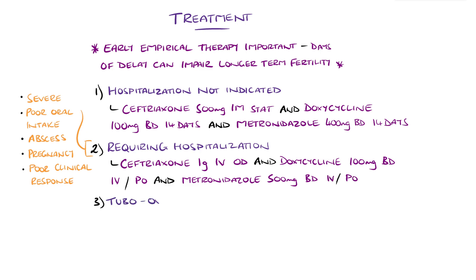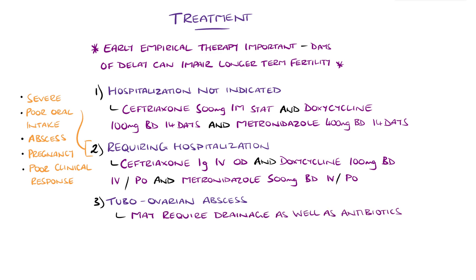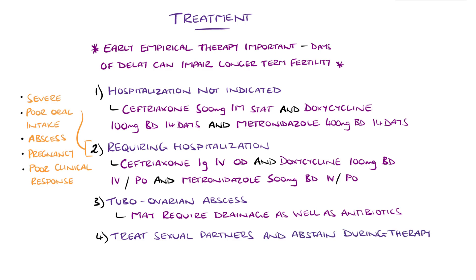Tubo-ovarian abscess may require drainage guided by ultrasound or CT, in addition to antibiotic therapy. Surgical intervention is needed if rupture occurs or if the abscess fails to resolve. Treatment of sexual partners for gonorrhea and chlamydia is essential to prevent reinfection, along with abstinence during therapy until confirmed cure.